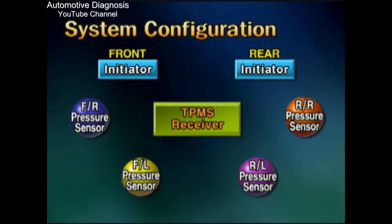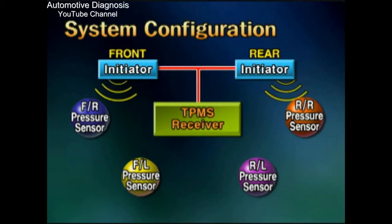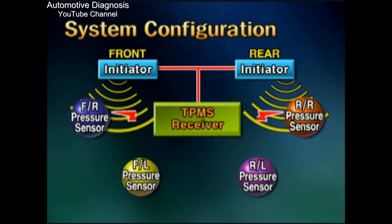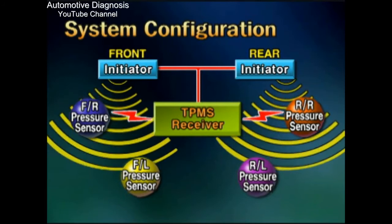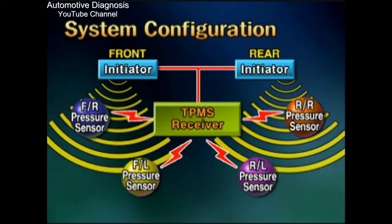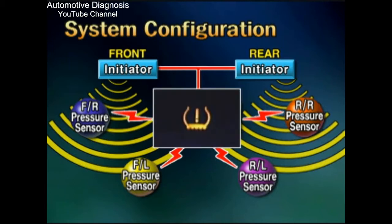For the system operation, when the receiver sends the signal for waking up the tire pressure sensor, the initiator wakes up the pressure sensors one by one by increasing the amplitude of the LF signal. The woken-up pressure sensors transmit the RF signal to the receiver. The receiver monitors the pressure and temperature of the tire, and if the pressure is lower than the threshold value, the receiver activates the low pressure warning lamp on the cluster.